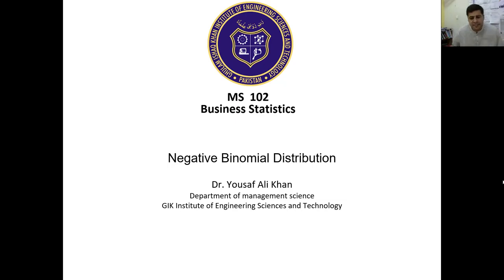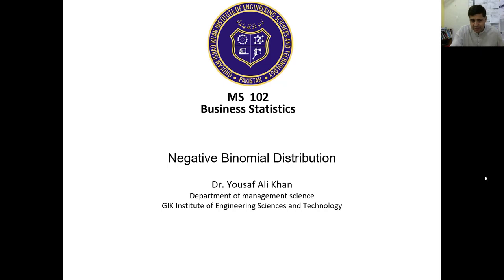Negative binomial distribution is another discrete probability distribution, which is more similar to the binomial distribution. If you understand the basic four properties of the binomial distribution, negative binomial distribution is very simple, but it will be a little bit different. If you understand the basic concept of each discrete probability distribution, you will be able to identify it.